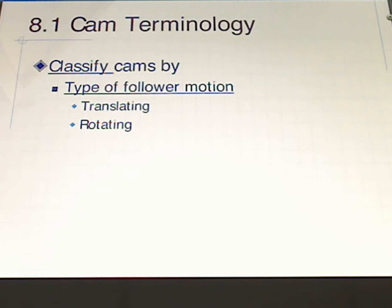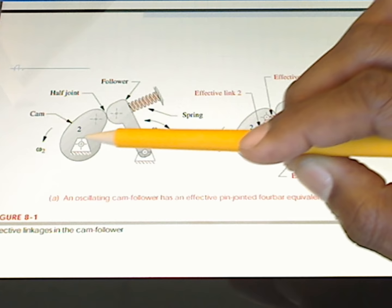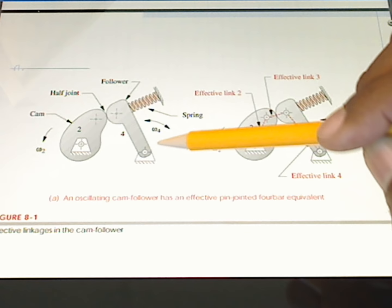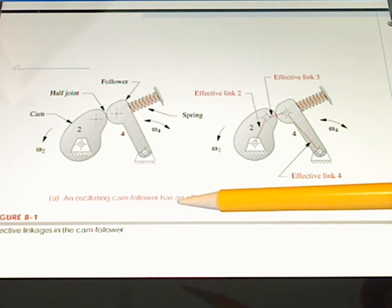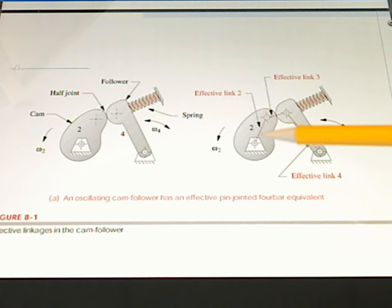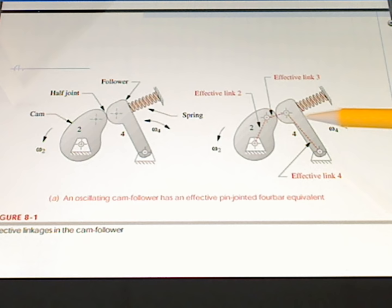Cams are classified by many different things. The first we will look at is the type of follower motion that the cam has — we have either translating or rotating cams. Here we have an example of both types. This first type, where the cam is linked with a revolute ground, has a follower also pivoting — this would be an example of a rotating follower. As this cam rotates at rate omega 2, the length of the coupler and other links also change shape.